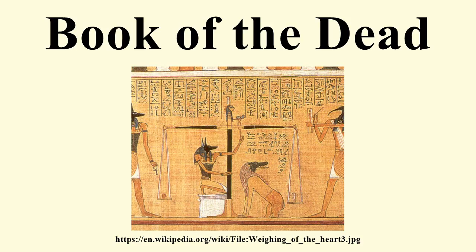The purpose of the pyramid texts was to help the dead king take his place amongst the gods, in particular to reunite him with his divine father Ra. At this period the afterlife was seen as being in the sky, rather than the underworld described in the Book of the Dead. Towards the end of the Old Kingdom, the pyramid texts ceased to be an exclusively royal privilege and were adopted by regional governors and other high-ranking officials. In the Middle Kingdom, a new funerary text emerged: the coffin texts.